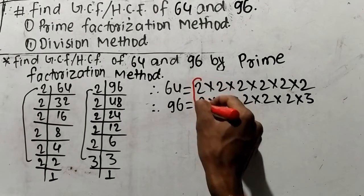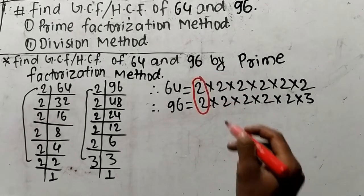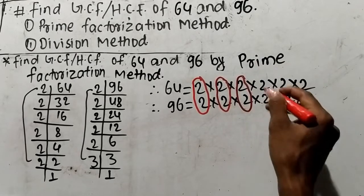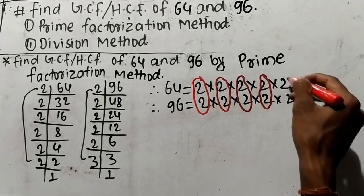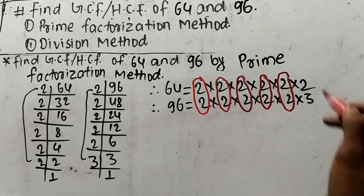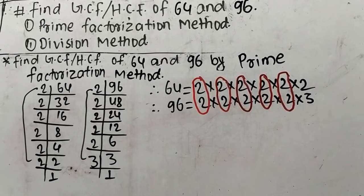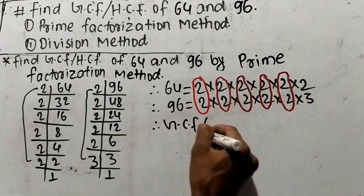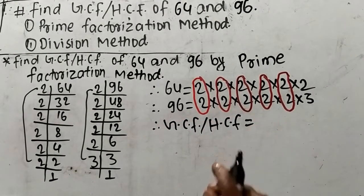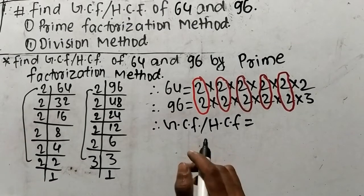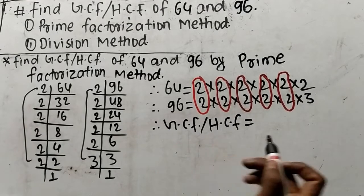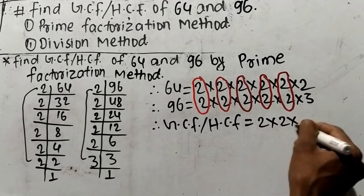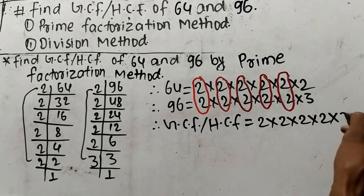Here we have 2 and here is also 2, so 2 is a common factor. Again 2 is common, again 2 is common, again 2 is common, and again 2 is common — giving us five 2s as common factors. At last, we have 2 and 3 which are non-common factors. GCF or HCF is the product of all common factors only, so we have five 2s as common factors.